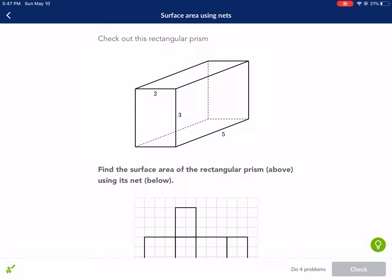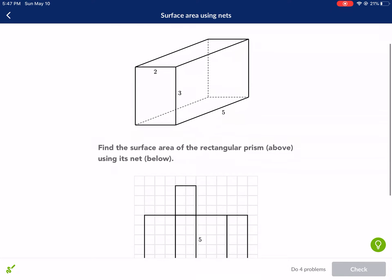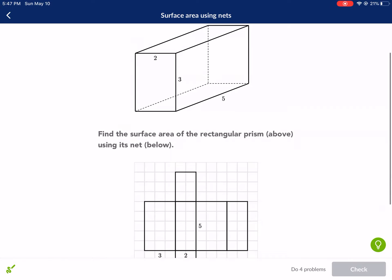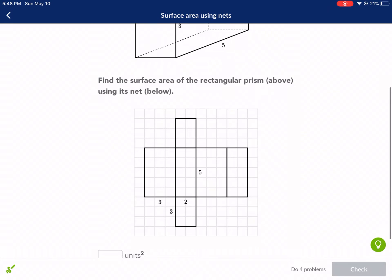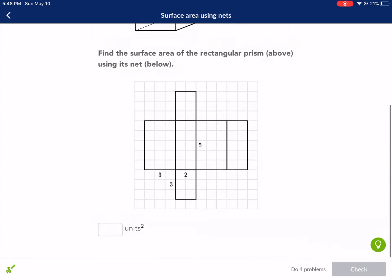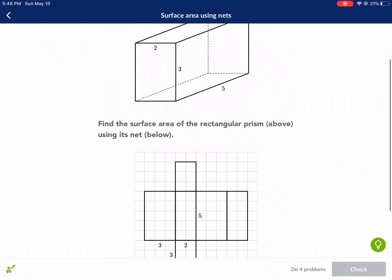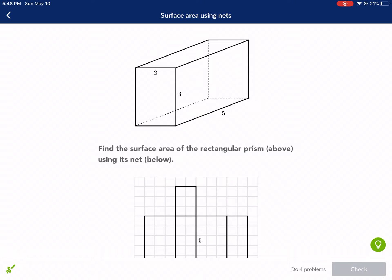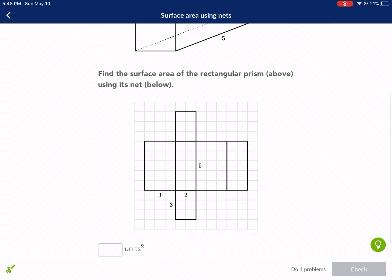It says check out this rectangular prism. I'm checking it out right now and I see it's 2x3x5. And it says find the surface area of the rectangular prism above using its net. A net is essentially if you take like an Amazon box, for example, and then you fold it flat and flatten everything out and expand it. It's how you kind of build a box.